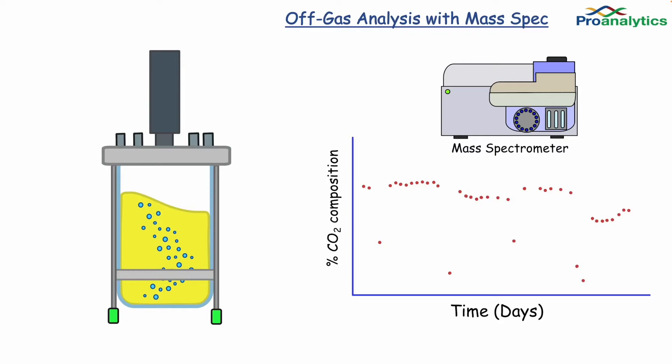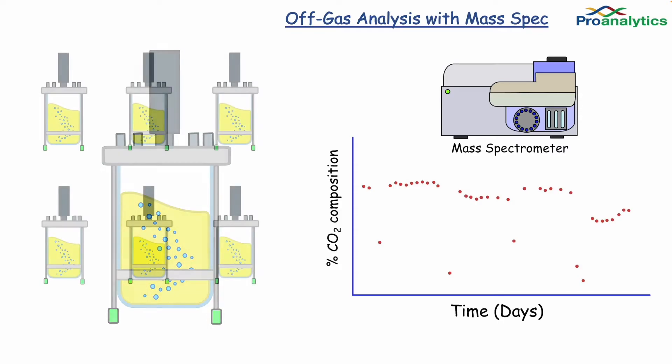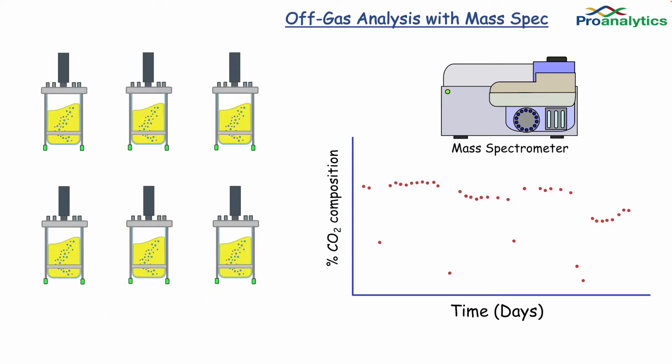Unfortunately, these advantages are compromised by several disadvantages, such as contamination risk during sampling, the time needed to prepare samples, and when multiplexing, there can be time delays between reactors since they all need to share the same mass spec for analysis.